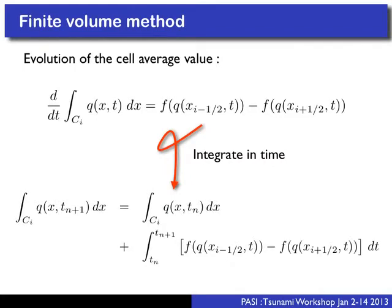If we integrate in time, we can write an exact expression: the average value at time level n+1 equals the average value at time level n, plus the time-averaged difference of these fluxes. This piece — the time-averaged flux difference — is what we need to figure out how to compute. That's the heart of a finite volume scheme.